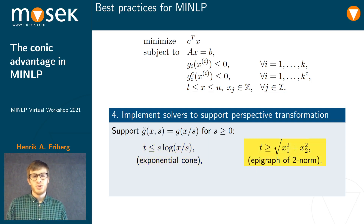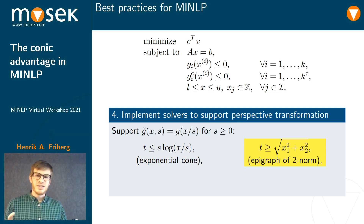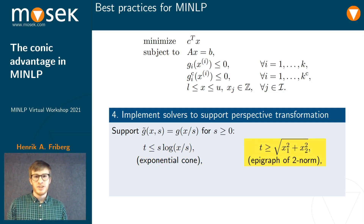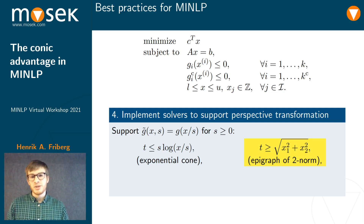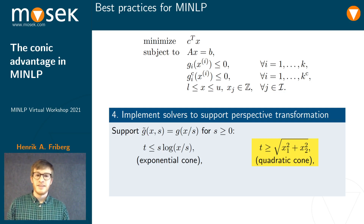If we do it to the epigraph of the 2-norm, we would see that the scaling factor would actually cancel out – it would not be introduced. And we can recognize this set as a quadratic cone, since the epigraph of the 2-norm is already homogeneous.